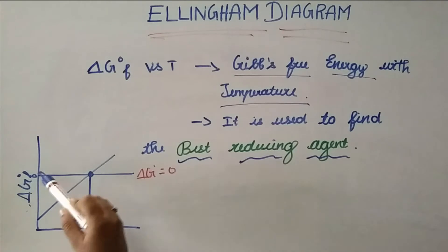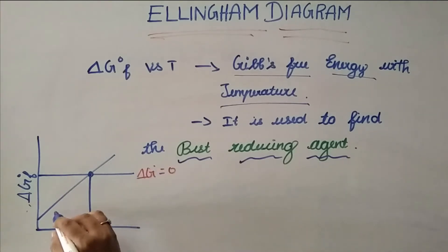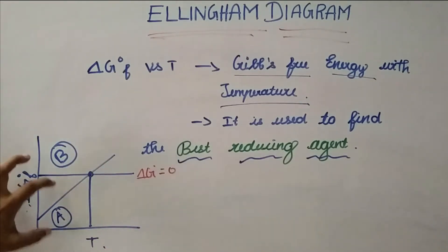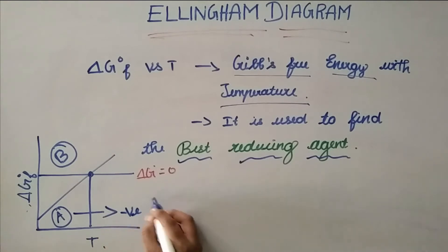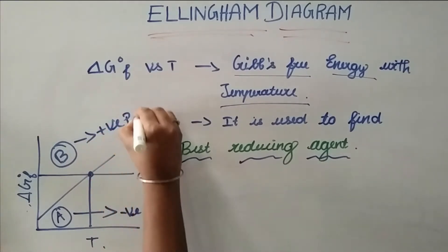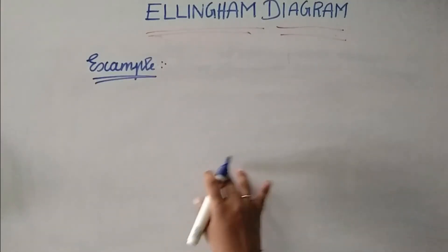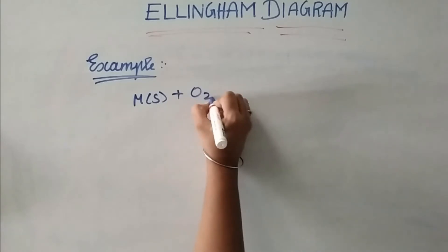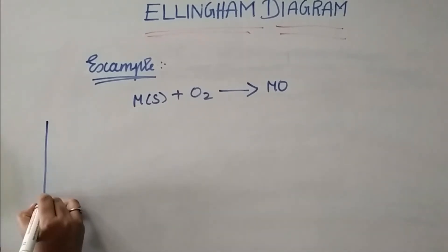The graph shows δG⁰ versus T. There are different lines at different temperatures. The area below a line represents a negative part, and the area above the line represents a positive part. Let's take an example: a metal in solid state reacts with oxygen to form a metal oxide.